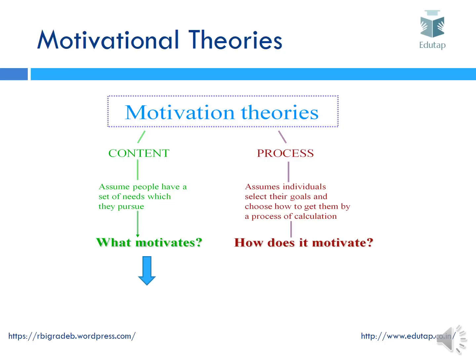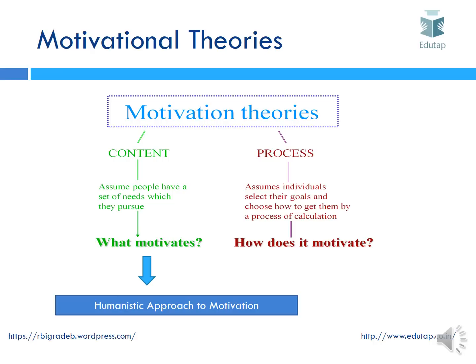There are two types of motivational theories. The first is content-based theories, and the second is process-based theories. Content-based theories assume that people have a set of needs and those needs motivate them to come into action. Process-based theories employ a much more complex process which says that individuals select their goals and make calculations to achieve them. In summary, content-based theories ask 'what motivates people' — which needs — while process-based theories ask 'how do people get motivated.' In this video we shall only discuss content-based theories; process-based theories will be covered in a separate video.